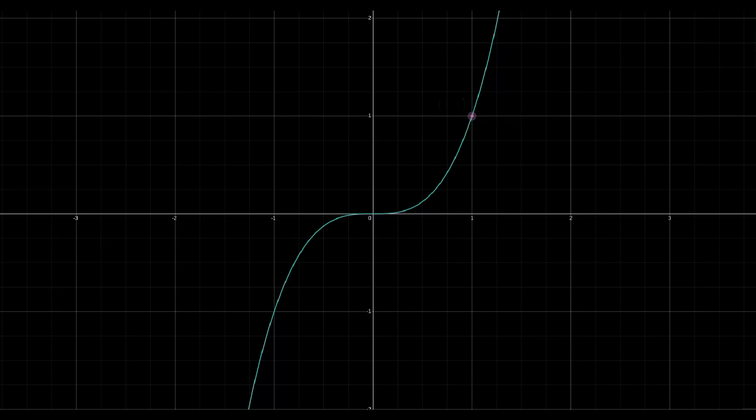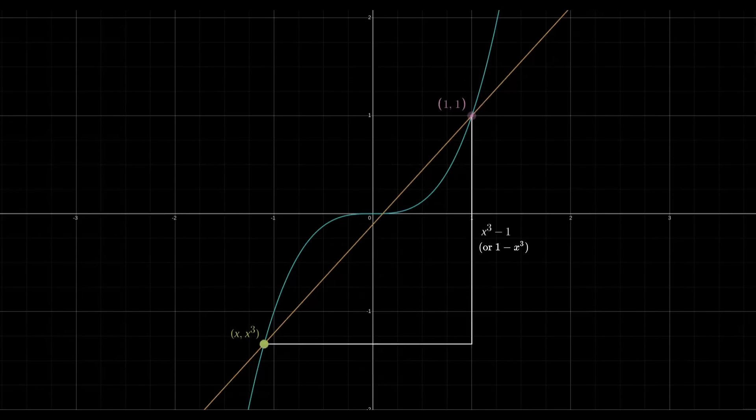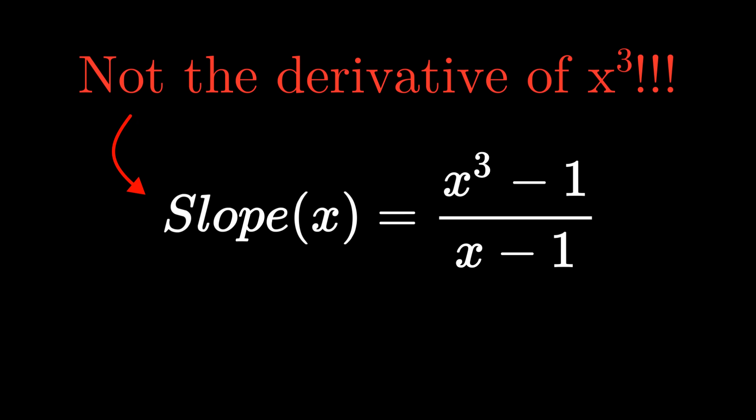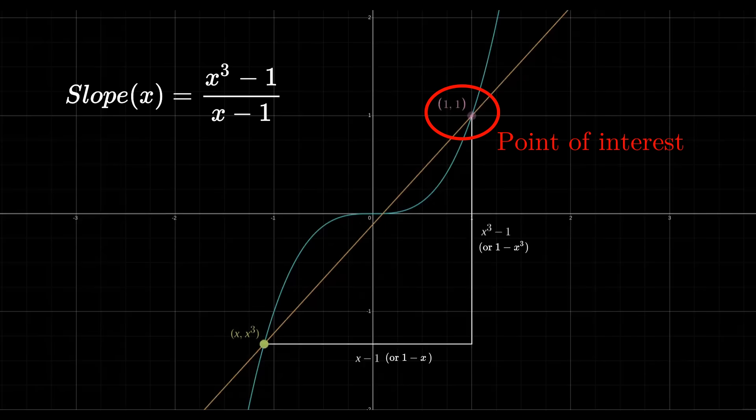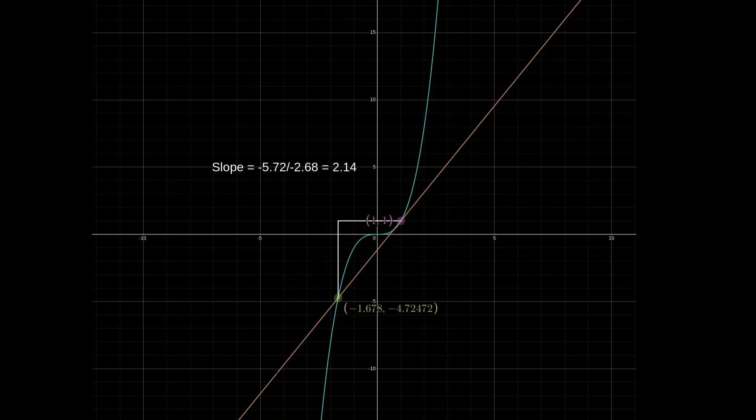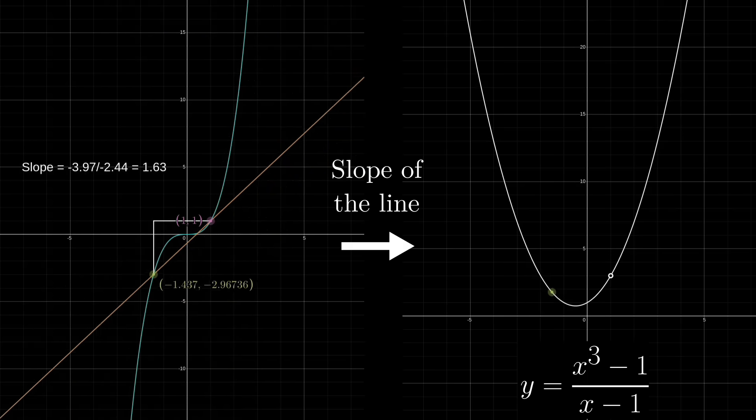But what we can do is consider the slope between that point on the graph, whose coordinates are 1 comma 1, and any other point on the graph, whose coordinates would be x comma x cubed. The rise would be x cubed minus 1, and the run would be x minus 1. And so the slope, rise over run, would be the rational function x cubed minus 1 divided by x minus 1. And to be clear, this function is not the derivative of the function x cubed as a whole. It's a function focusing on the slope between our point of interest at x equals 1 and all other points on the graph of x cubed. As we move x around, the different slopes we get trace out this rational function.